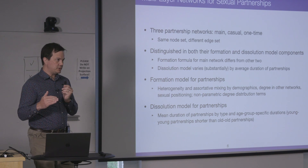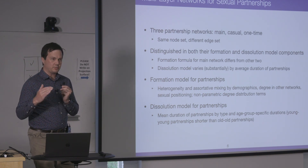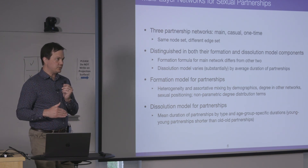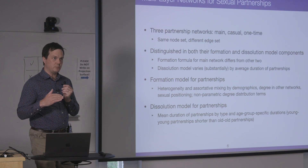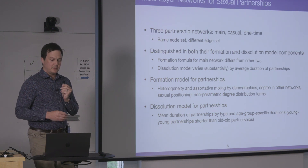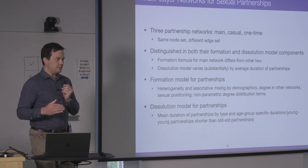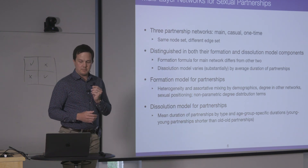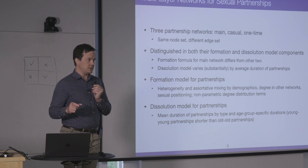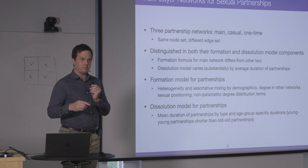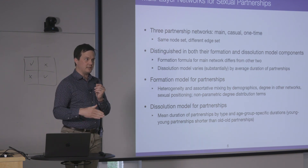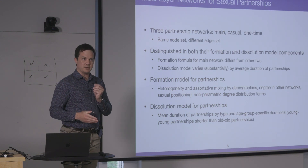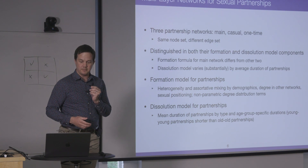We built a network-based model to explore the relative importance of those two factors using a multi-layered network for sexual partnerships. This framework has three different types of sexual partnerships — main, casual, and one-off — with the same node set but different edge sets. They're primarily distinguished with respect to dissolution: one-off partnerships are instantaneous, whereas main and casual partnerships have some durability.